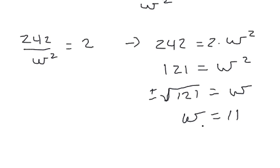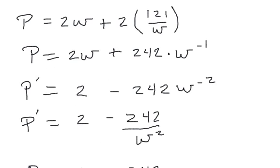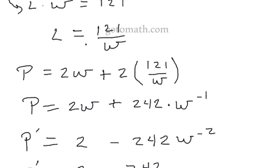Well, we found our W, and now what we're going to need to do is find L. So let's go up here, remind ourselves what that relationship is, and here's the relationship right here. So we have L is equal to 121 over W.